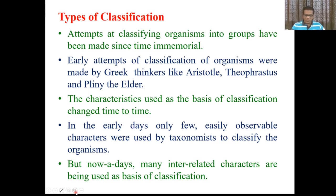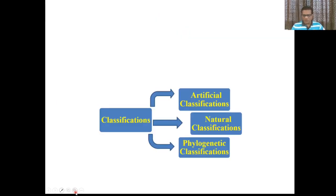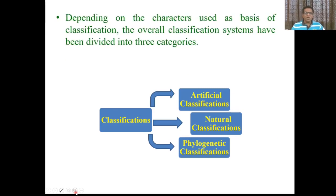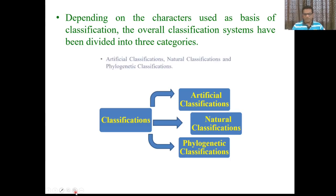The basic characteristics used for classification in earlier days were different and now they have been changed. Depending on the characters used as the basis of classification over time, the overall classification systems have been divided into three categories: artificial classifications, natural classifications, and phylogenetic classifications.